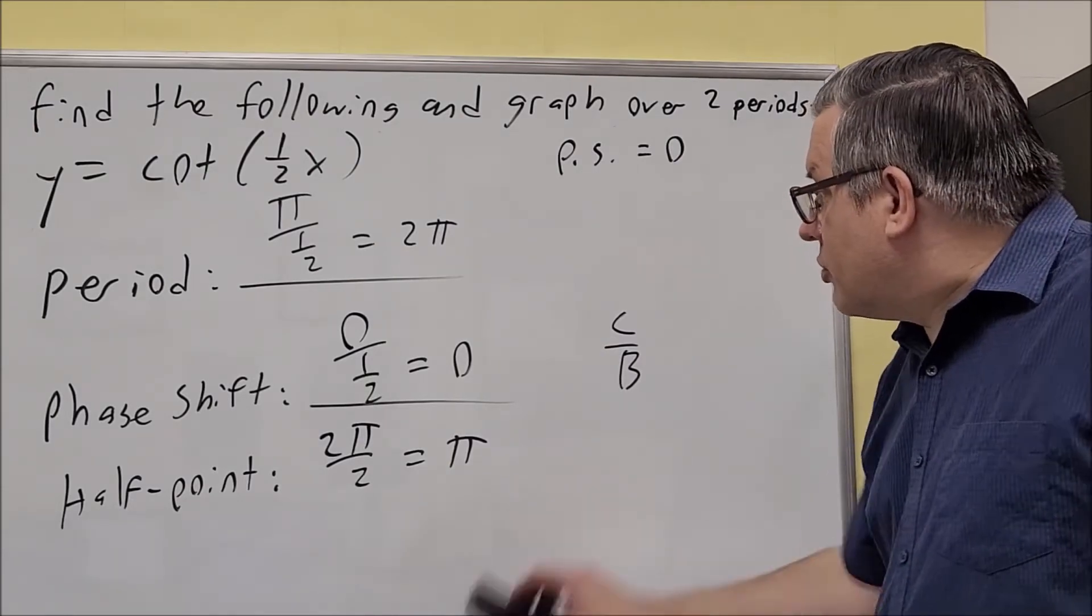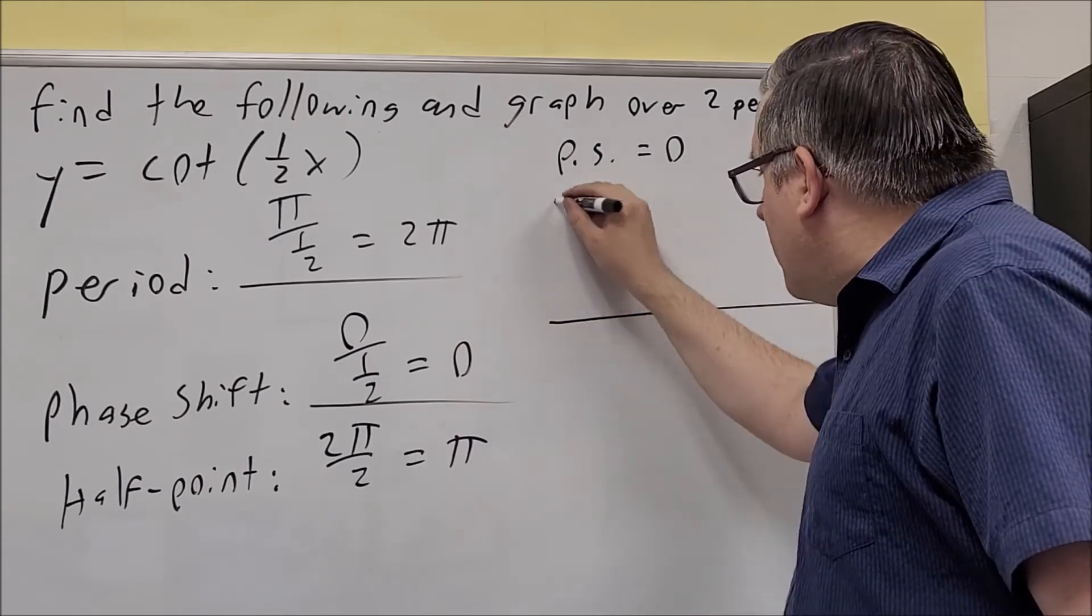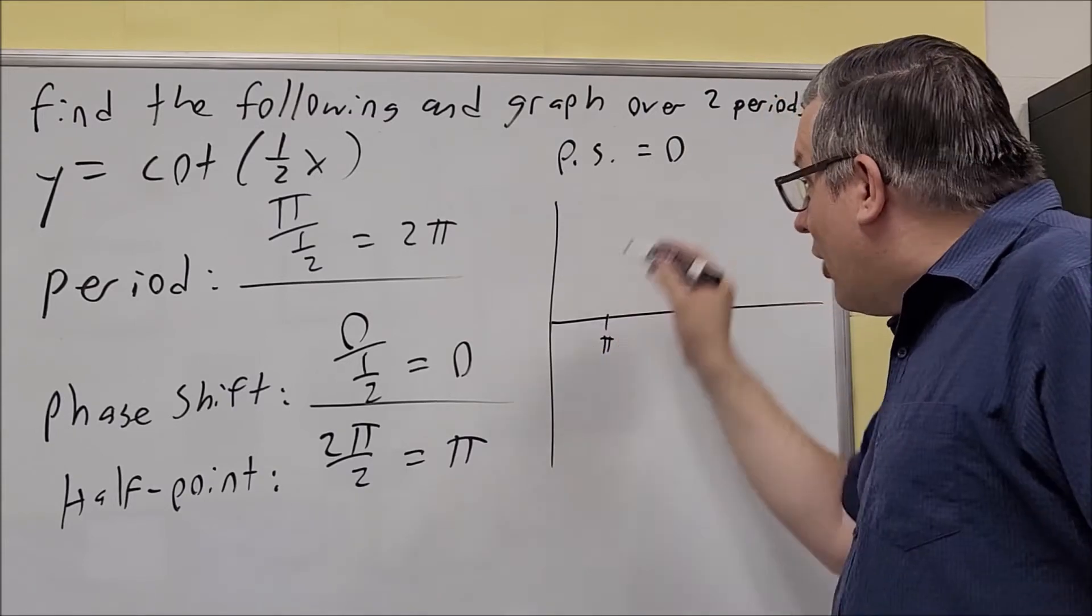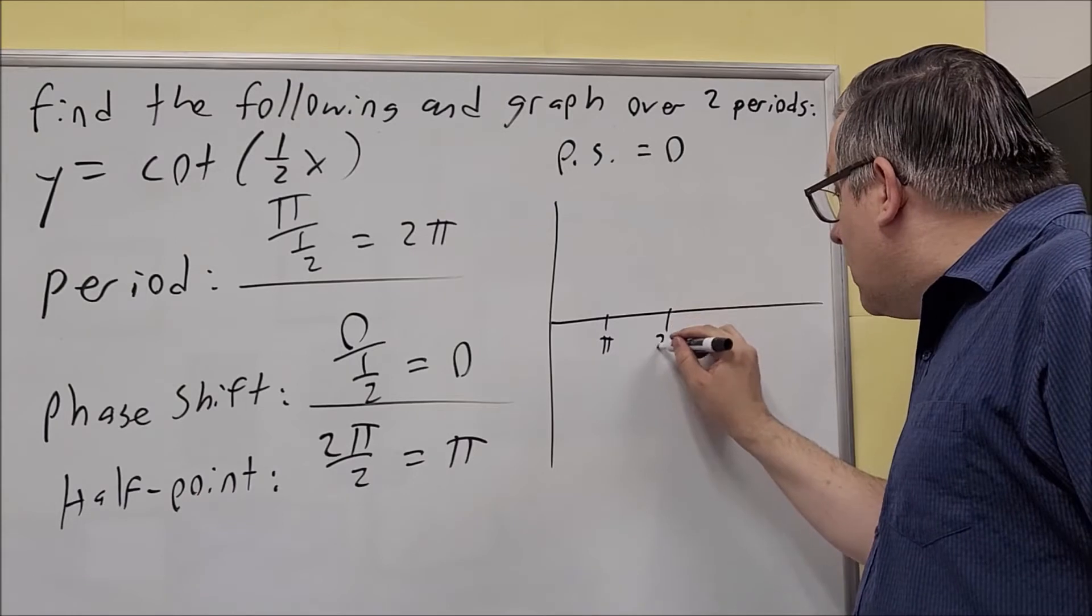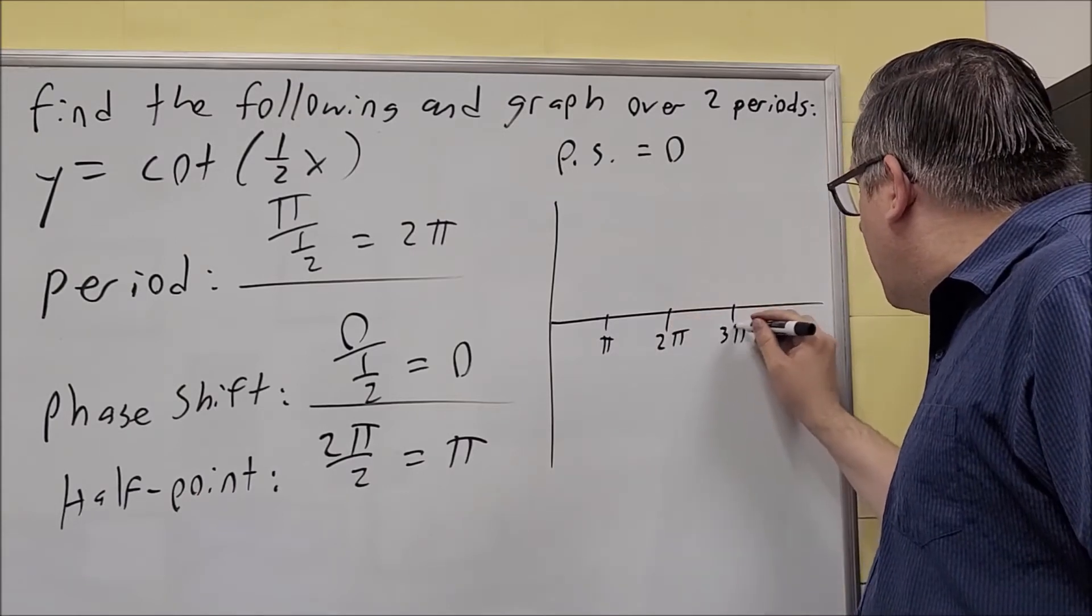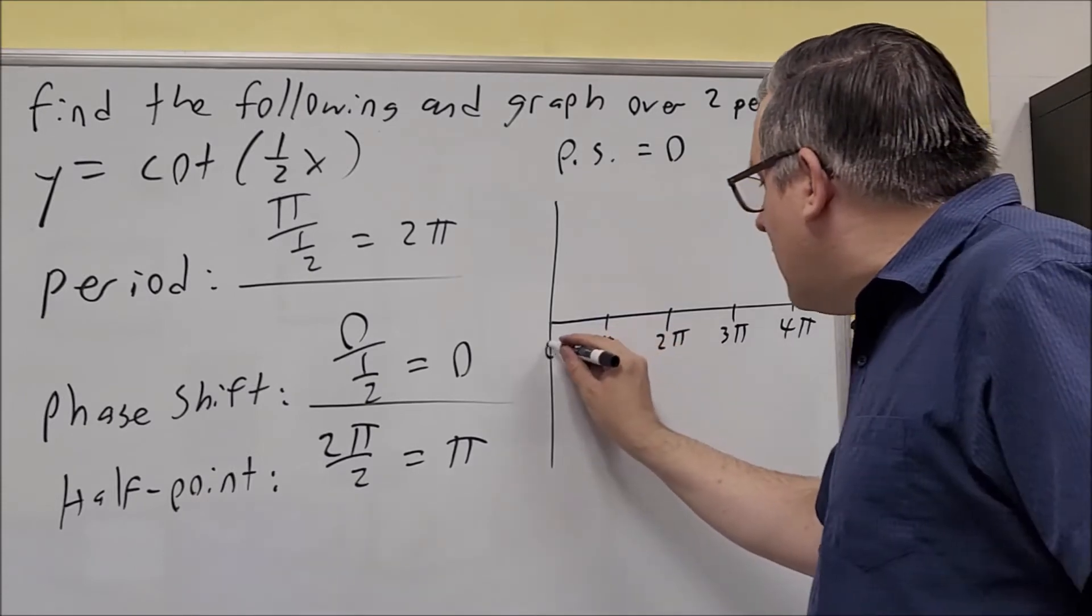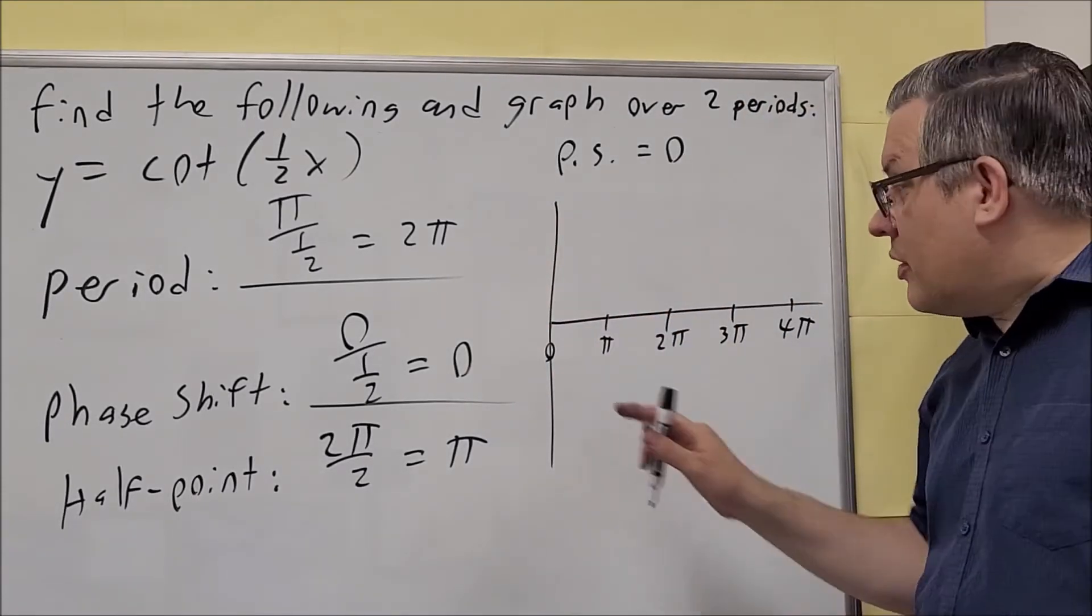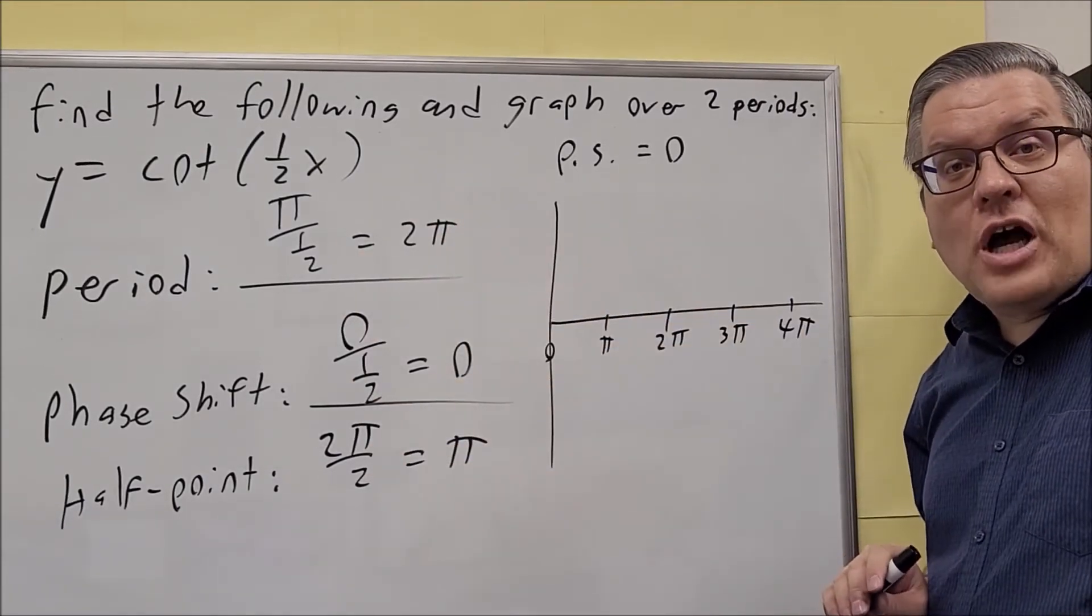So I'm just going to jump right into the graph and put that information here. Here is 0, and if I take 0 and add π, I get π. If I add π to that, I get 2π, then 3π, then 4π. So on this one, it's not necessary to show all those steps. If you can already see the pattern, it's not necessary to write all those steps like I've done for the previous problems.